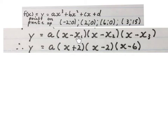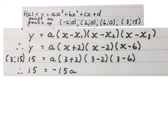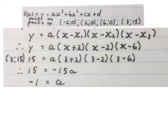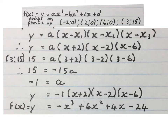We have a minus 2, and a minus times a minus will give a plus 2, and we end up with this. They gave us another coordinate (3, 15). The 15 we replace in the place of y and the 3 we replace in each x place. Simplify the brackets and solve for a by dividing by minus 15 on both sides. Then replace a back and multiply out the brackets — this is the final equation of this cubic function.